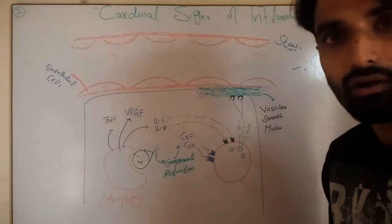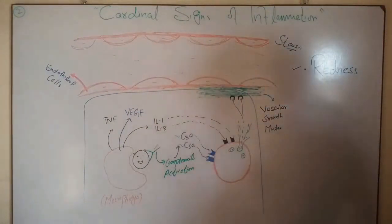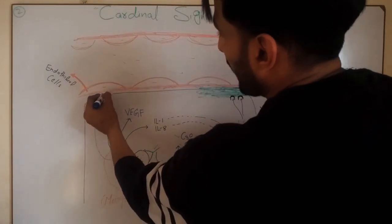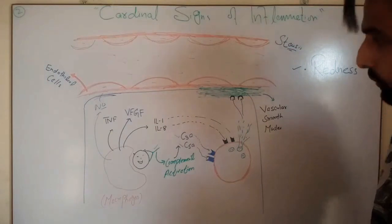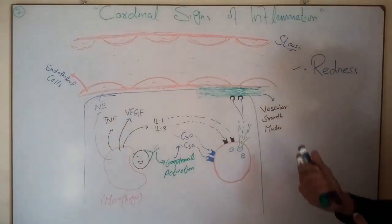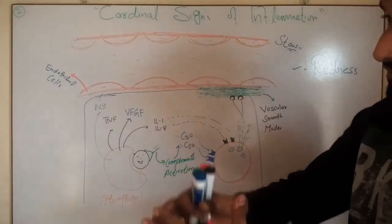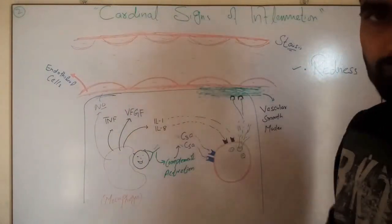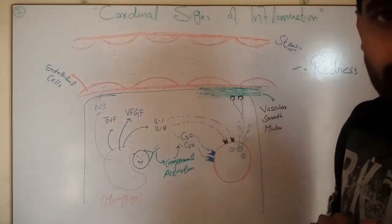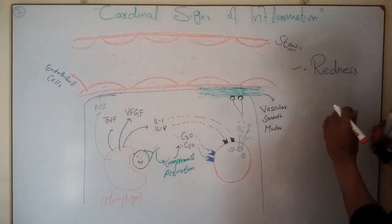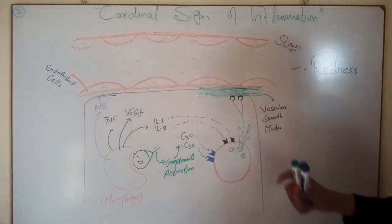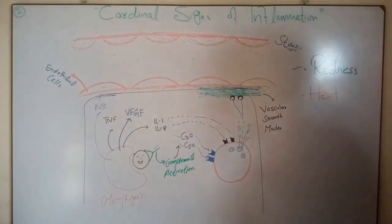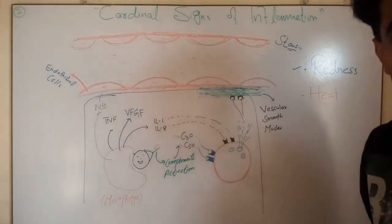Redness appears as a result of vasodilation caused by histamine and other mediators. For example, macrophages also release nitric oxide, which can directly act on smooth muscle and cause vasodilation. Because of the increased blood supply toward this tissue, warmth — or heat — can also be felt. So the second sign of inflammation is heat; that particular area around the tissue will get warm.